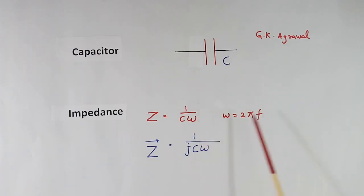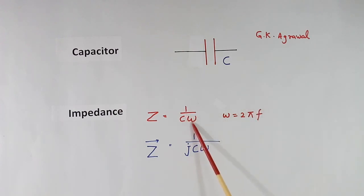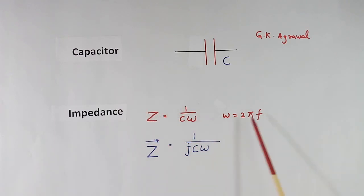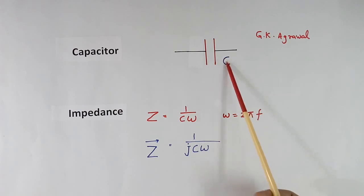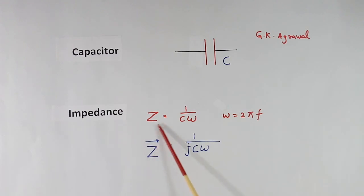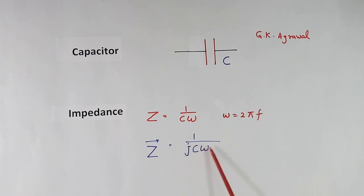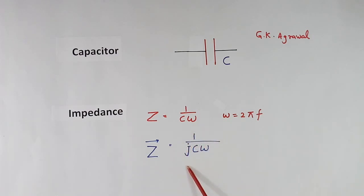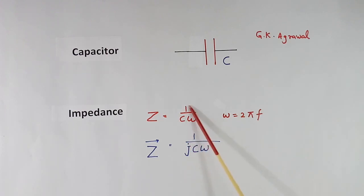If frequency F is more, then omega is more, so this total value will come down — impedance will come down. So higher the frequency, impedance of this capacitor will be less. I have also written Z in vector form: that is equal to 1 by j C omega. This is used when we do vector calculation, but the numerical value of this vector is still 1 by C omega. Only J is added; J is a vector.